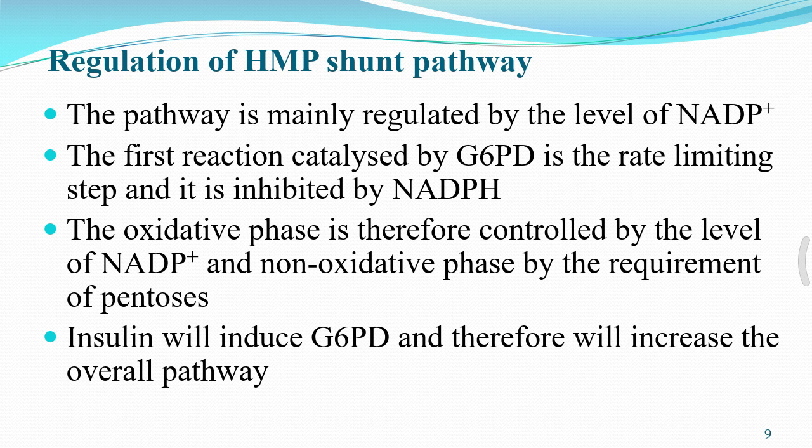The regulation of HMP shunt pathway is mainly governed by the level of NADP+. The first reaction, catalyzed by glucose 6-phosphate dehydrogenase, is the rate-limiting step and is inhibited by NADPH. The oxidative phase is controlled by the level of NADP+, and the non-oxidative phase is controlled by the requirement of pentoses. Insulin induces glucose 6-phosphate dehydrogenase, increasing the overall pathway activity.